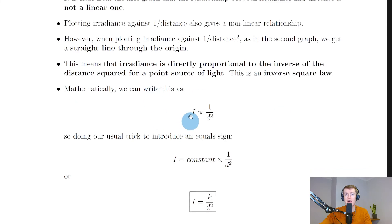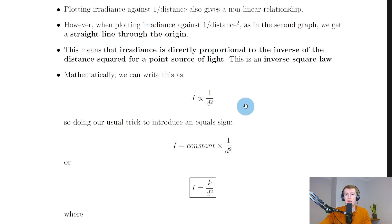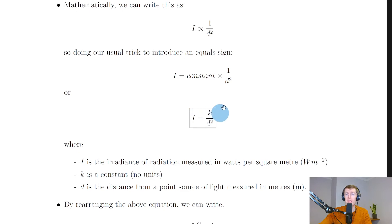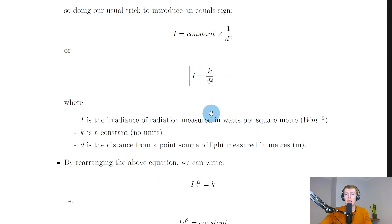Mathematically, irradiance I is directly proportional to one over d squared. Replacing the proportionality sign with an equals sign requires multiplying by a constant k, giving I = k/d². In this equation, I is irradiance measured in watts per square meter, k is a constant with no units, and d is the distance from the point source measured in meters. This equation is provided on the relationship sheet in the exam.